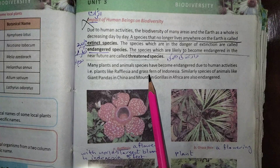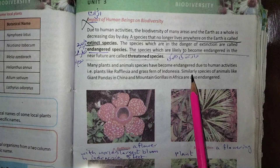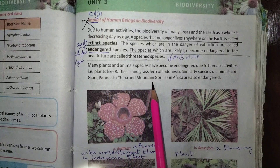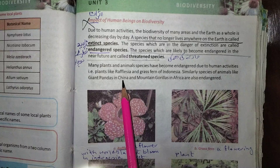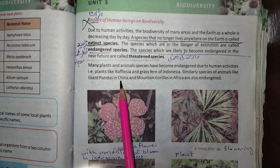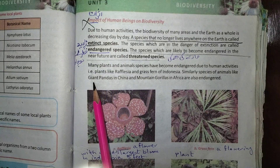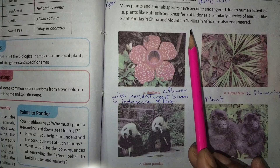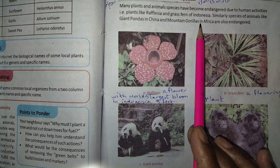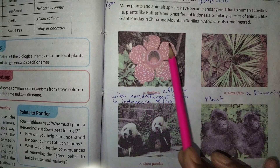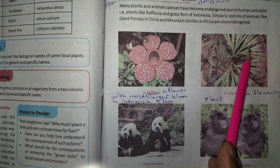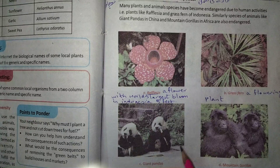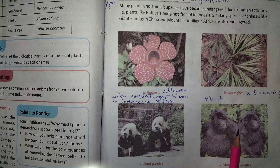The flowering plants have been endangered, along with many other species. Similarly, the species of animals like giant pandas in China and mountain gorillas in Africa are also endangered. Giant pandas, which are found in China, are hardly 250 to 300 in number. The other species have been endangered. In the same way, the mountain gorillas found in Africa are also very few. Look, this is Rafflesia, which is the biggest plant in the world, found in the tropical rainforests of Indonesia. These are giant pandas, which are few in China. These are mountain gorillas, which are few in Africa. These are endangered species of plants and animals.